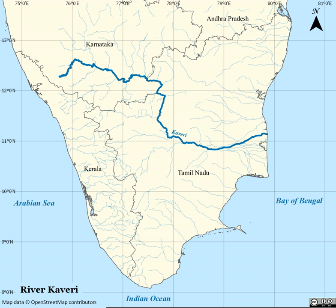As per the Supreme Court order, Karnataka will get 400.4 tmc feet, Tamil Nadu 200.25 tmc feet, Kerala 30 tmc feet, and Puducherry 7 tmc feet, while 14 tmc feet will be reserved for environmental protection.